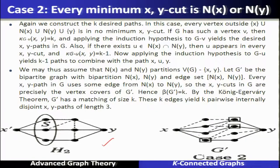Case 2 is also very similar: every minimum x-y cut is either N(x) or N(y). The same argument applies, and we have constructed pairwise internally disjoint paths of size lambda. Hence the theorem is proved.